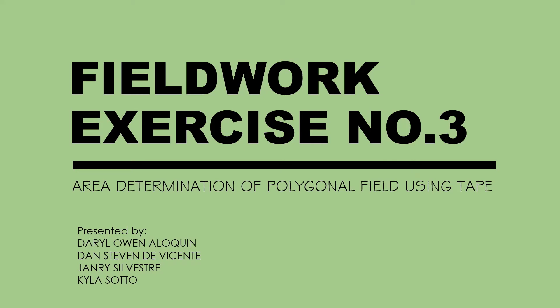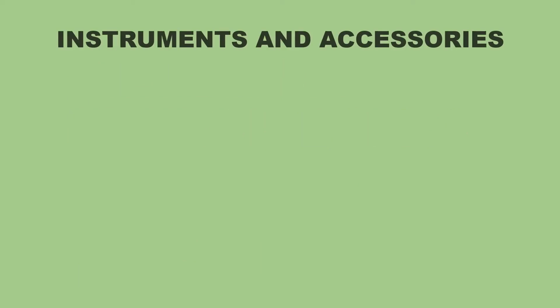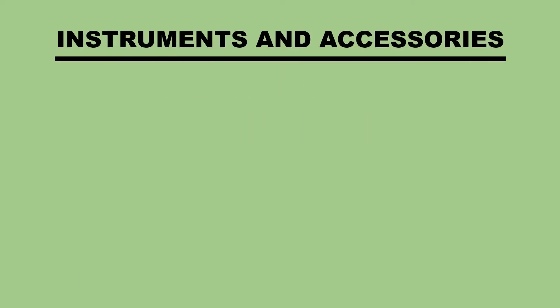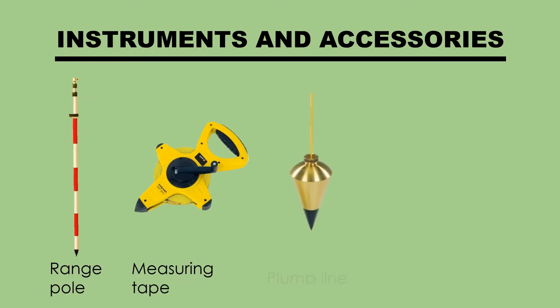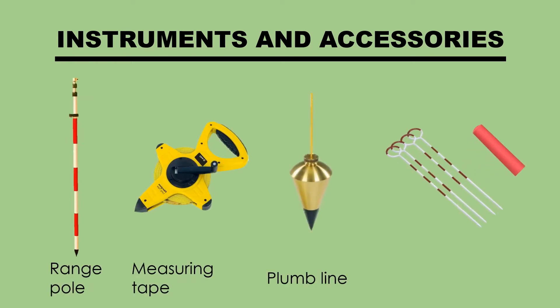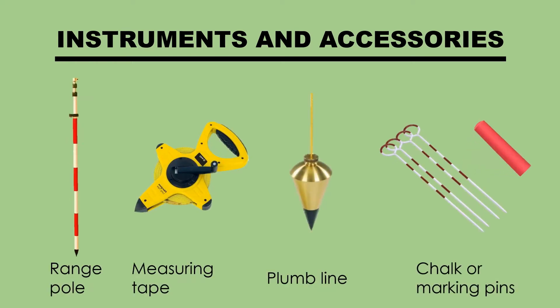Fieldwork Exercise No. 3: Area Determination of Polygonal Field Using Tape. Instruments and accessories needed: Range Pole, Measuring Tape, Plumb Line, and markers like chalk or marking pins.